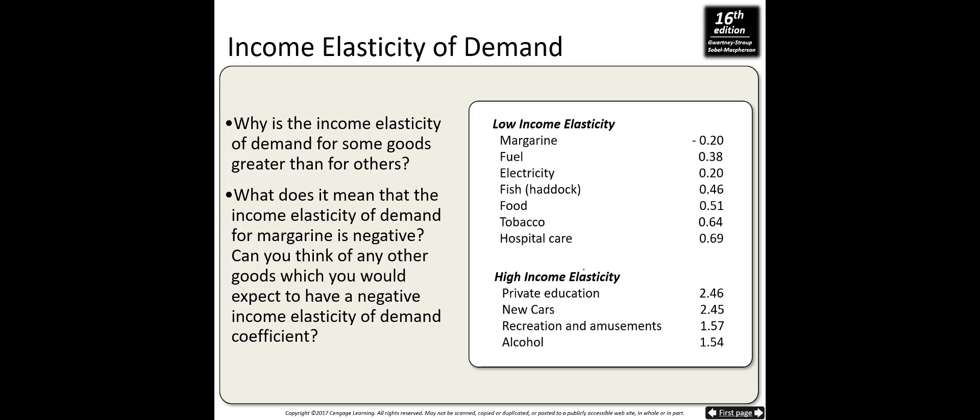Why is the income elasticity of demand for margarine negative? Because when you have more income, you buy less margarine — it's an inferior good. A magnitude greater than 1 means you are highly income-elastic, meaning very sensitive to income changes when buying that product.